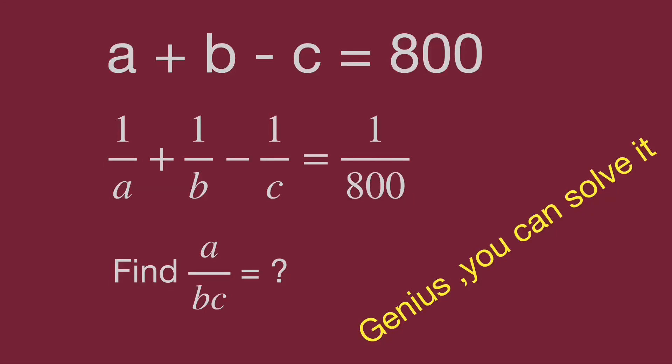Hello, you are watching Bala Hippo math genius reader. We have the equations: a plus b minus c equal to 800, and 1 over a plus 1 over b minus 1 over c equal to 1 over 800. Find the value of a over bc.